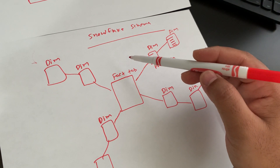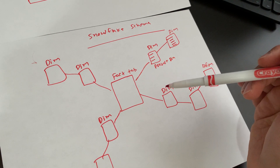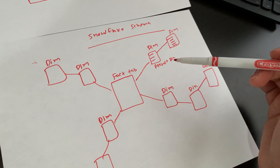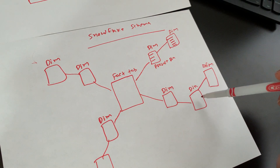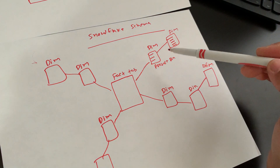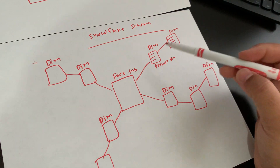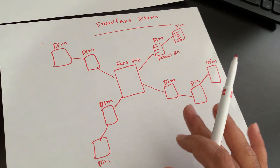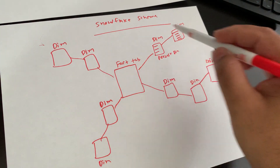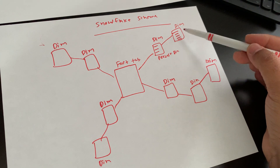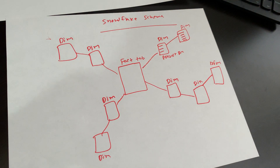Snowflake schema is the logical arrangement of tables in a multi-dimensional database such that the ER diagram resembles a snowflake shape. It is an extension of a star schema and adds additional dimension tables. The dimension tables are normalized, which means the data is split into additional tables. Normalization splits one table form into another, and as you can see here, one table got normalized and became two, or three — that whole structure is called snowflake schema.